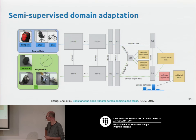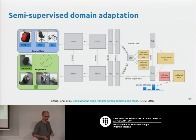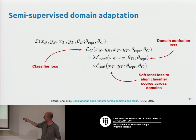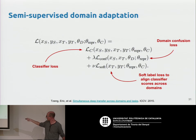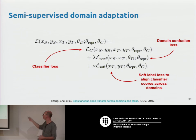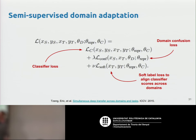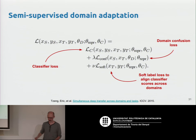The full loss function for this combined approach includes: standard classification loss for the source domain, soft-label distillation loss for the target domain, and the domain confusion loss to align features so they are representative in both domains. You can combine all three: standard classification on the source domain, distillation loss classification on the target domain, and the confusion loss to adapt features across both domains.